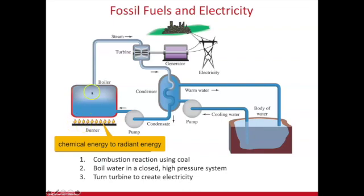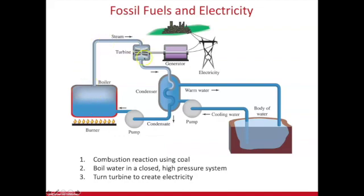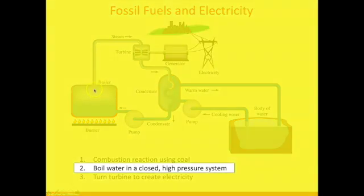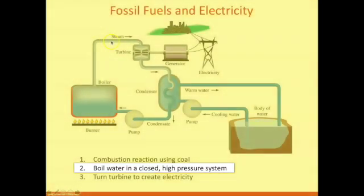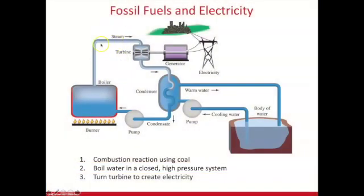That heat is used to boil water in a closed system — water running through all these pipes — alongside another closed system of water used to cool off the back end. The boiler uses that heat to boil water, which turns into steam and is pushed through the pipes.